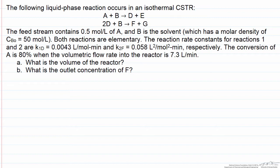We're given information on the conversion of A in this reaction system, and A is only participating in the first reaction. Since we know how much A is converted and we know the reaction kinetics associated with the reaction through which A is converted, we can determine the volume. We really don't need to know anything about the second reaction.